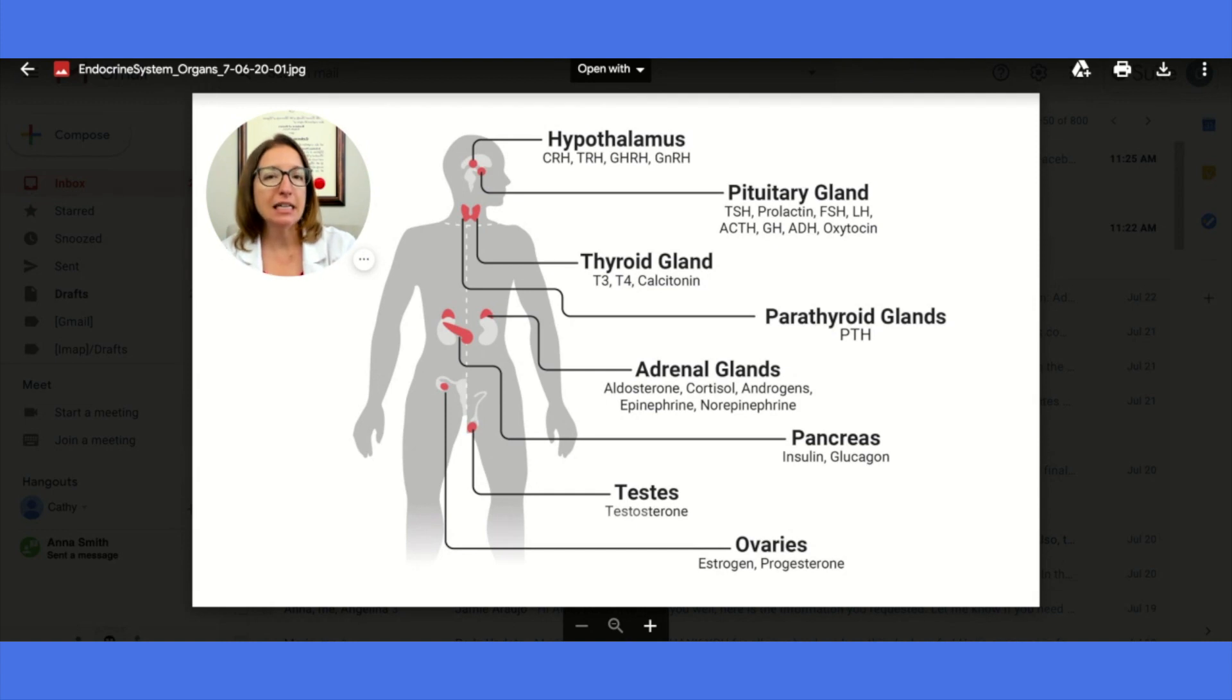So let's talk about the organs and glands of the endocrine system and what hormones they produce. Starting with the hypothalamus, the hypothalamus is located in the brain and it produces four key hormones. One is corticotropin-releasing hormone, then we have thyroid-releasing hormone, growth hormone-releasing hormone, and gonadotropin-releasing hormone.